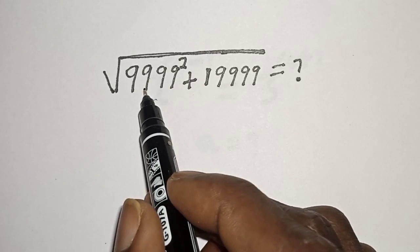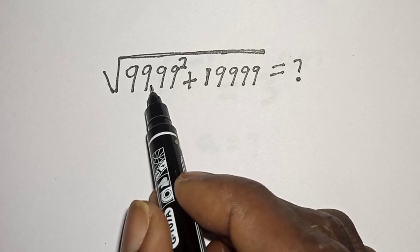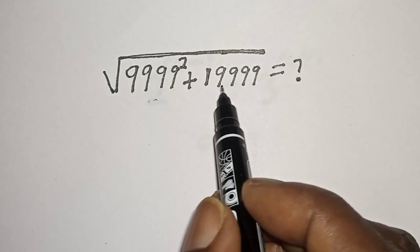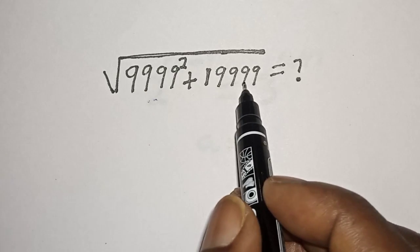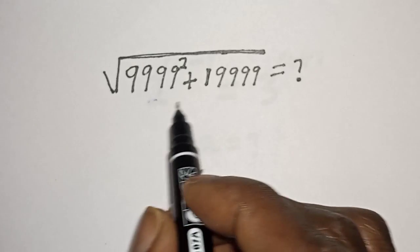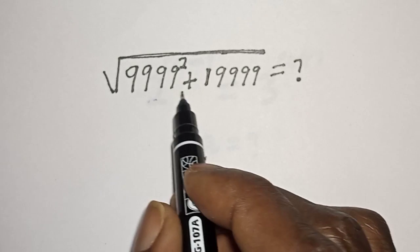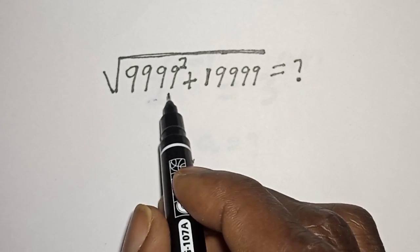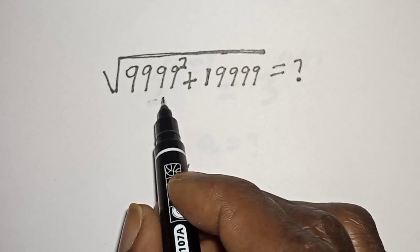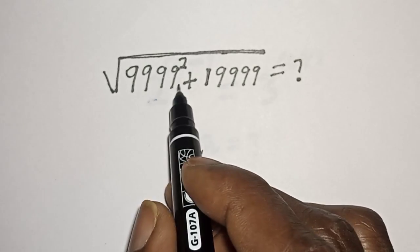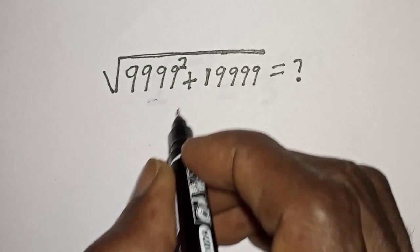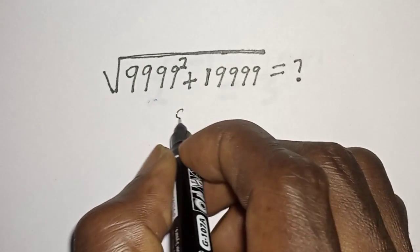Square root of 9,999 squared plus 19,999 is equal to what? Hi everyone, welcome to my class. In this class we quickly want to evaluate this nice radical problem. But before we proceed, please don't forget to like, share, comment and subscribe. Solution.